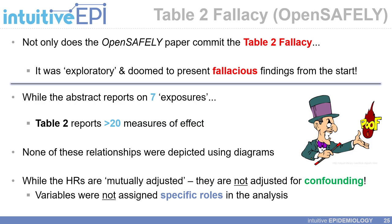Not only does the OpenSafely paper commit the Table 2 fallacy, it was exploratory and doomed to present fallacious findings from the start. While the abstract reports on seven exposures, their Table 2 reports on more than 20 measures of effect or 20 adjusted hazard ratios, and none of these relationships were depicted using diagrams or a hypothesized conceptual framework. So while the hazard ratios are mutually adjusted, they are not adjusted for confounding, because the variables were not assigned specific roles and confounding bias was not given clear consideration.